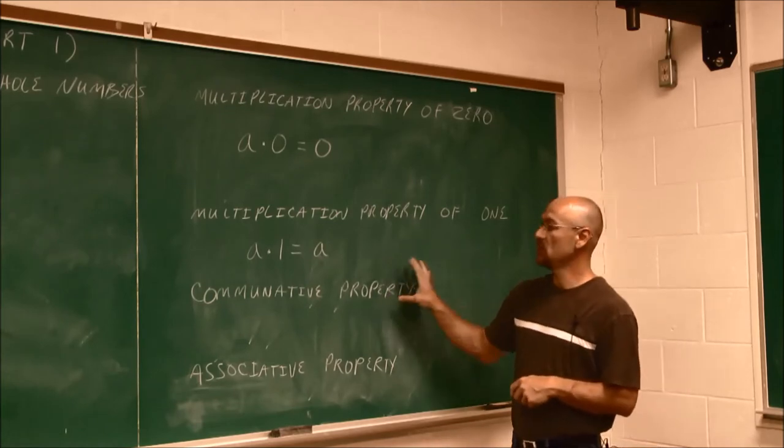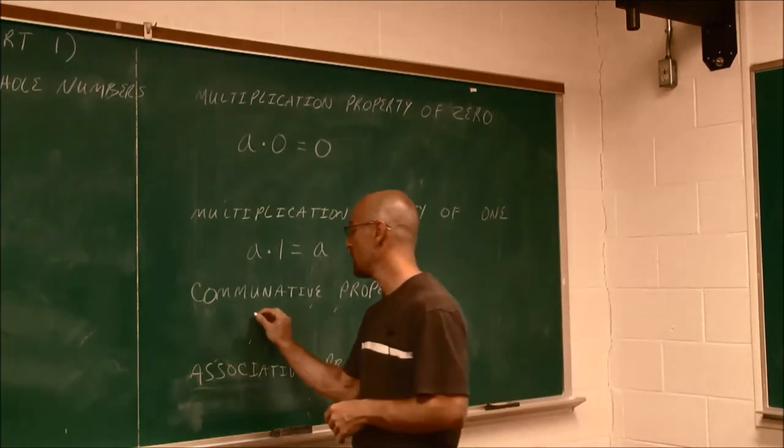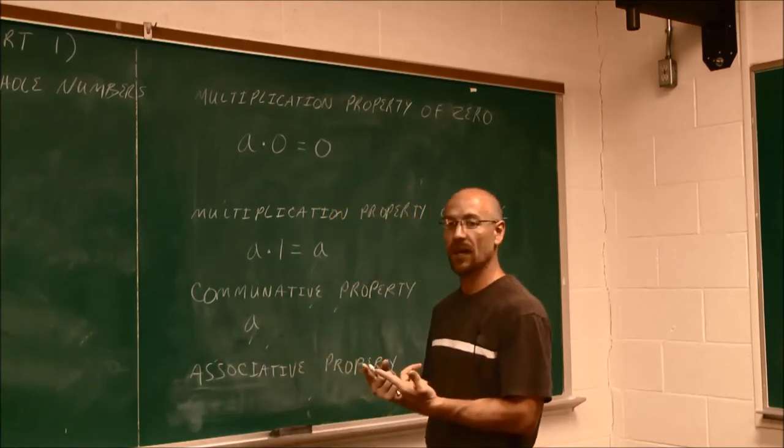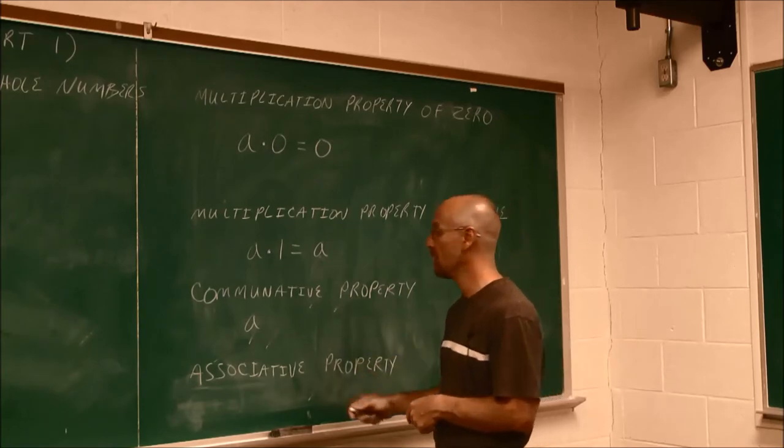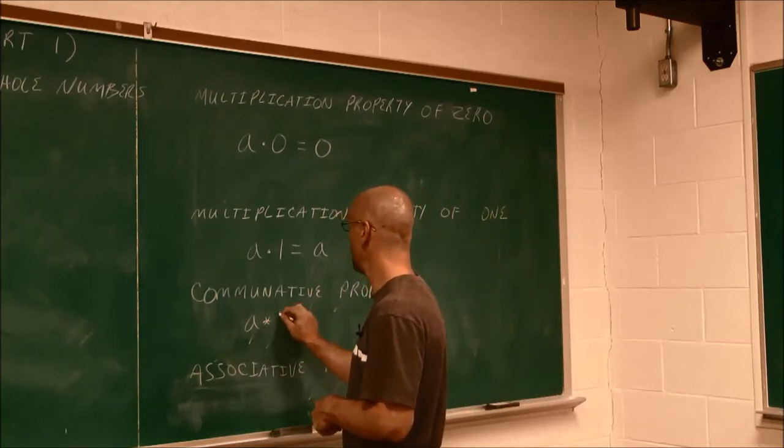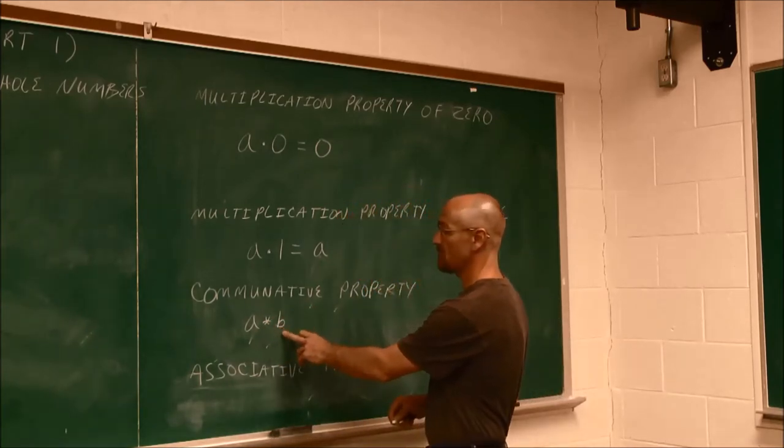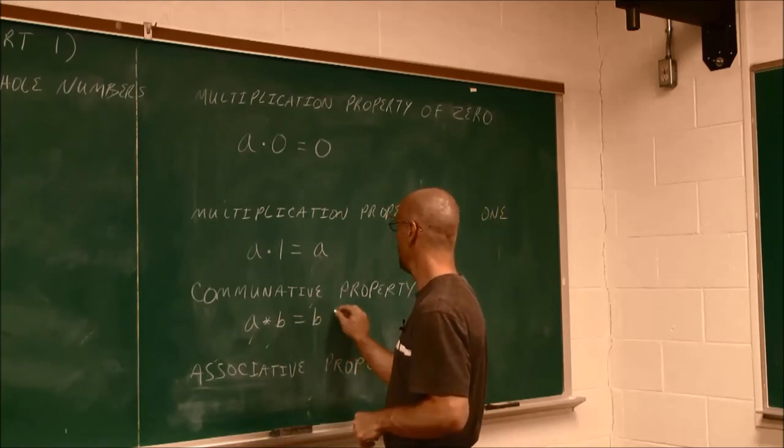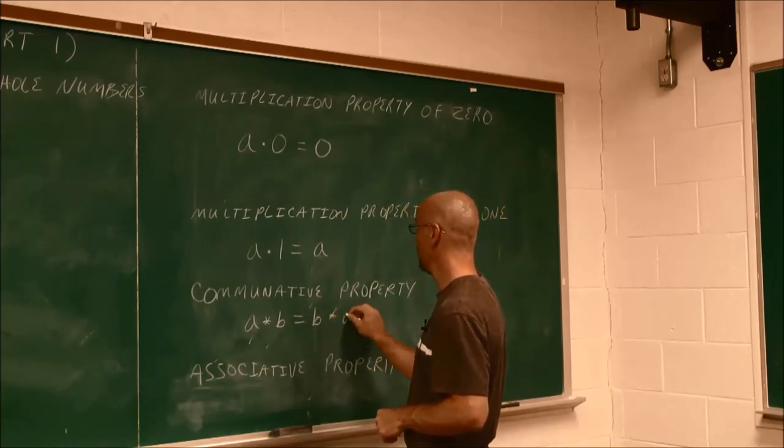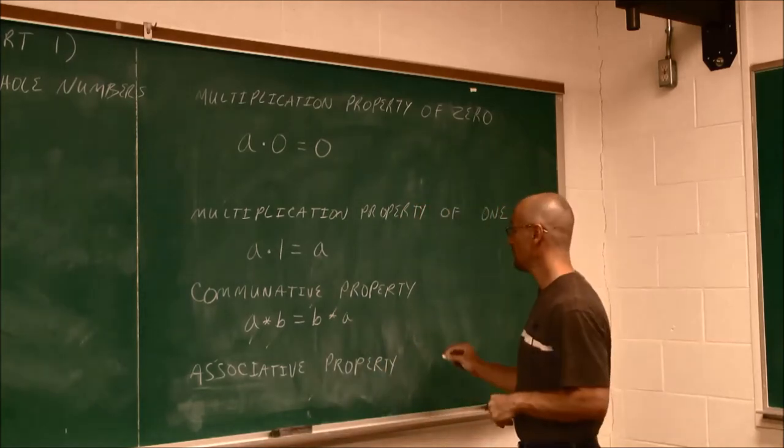The next is a commutative property. If we recall the commutative property of addition, if we had two values, we could add them in any order. Well, that also applies to multiplication. If I have two values, a times b, and this time I'm using an asterisk, it's the same thing as if I had b times a.